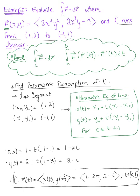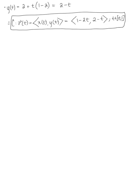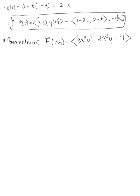Now that we have our parametric description of our curve, we need to parametrize the vector field and then find our tangent vector. We are given the vector field f in terms of x and y defined as components 3x squared, y squared, and 2x cubed y minus 4. We need to replace all of these x's and y's with the components we just found for C.